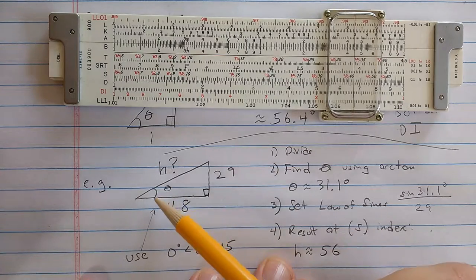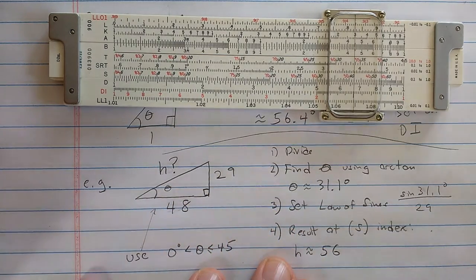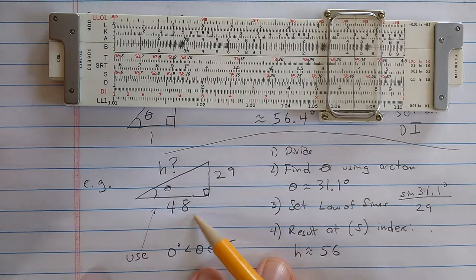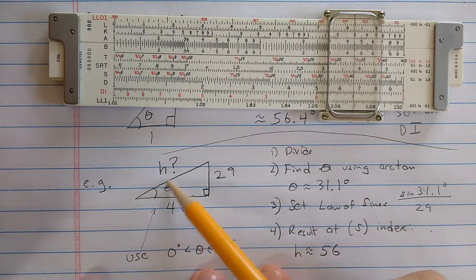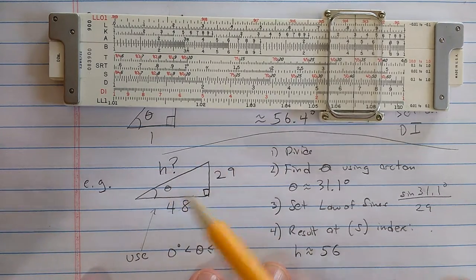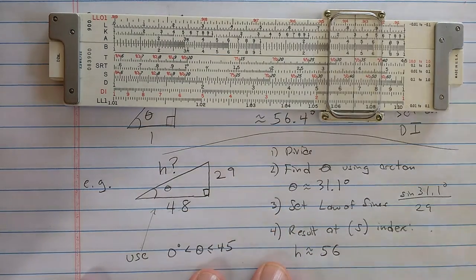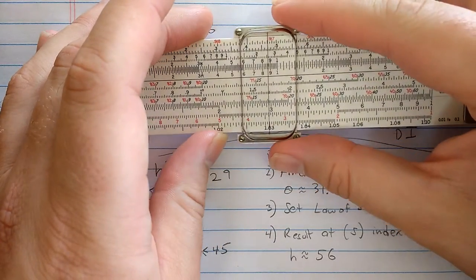Imagine also that this applies to a vector where you know the two components. You want to know the length of the vector. The first thing is to divide. So I'm going to take 29 and divide by 48. The easiest thing to do is to find the angle, which is less than 45 degrees, which is going to correspond to dividing the smaller number by the larger number.